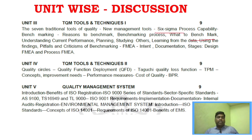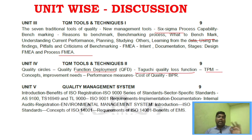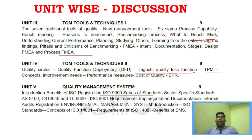Unit 3 covers benchmarking, Six Sigma concepts, traditional tools, and FMEA — these are the most important areas. Unit 4 is simple; focus on about 3 questions — QFD, TQM qualification, and TPM. Unit 5 covers ISO 9000 series, ISO 14000 series, and ISO 9001 requirements and implementation — these are the key areas in Unit 5.